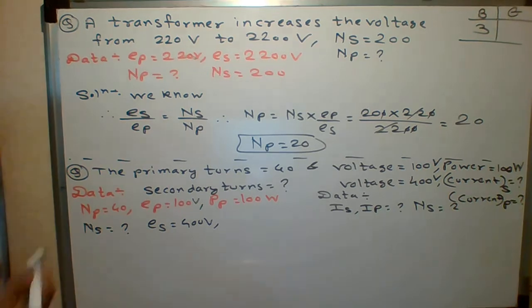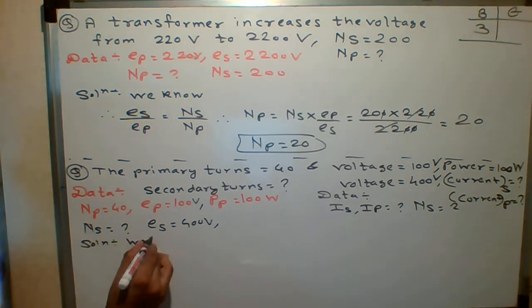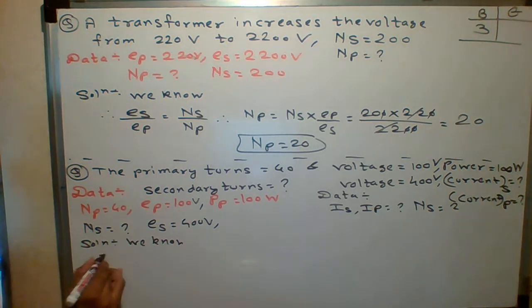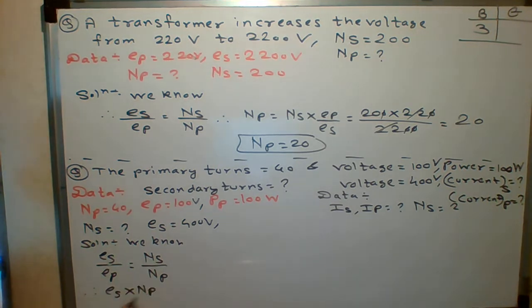Let us find out the answer. It is really easy question. Same as the same. What we have done in the last question. So students. We know. So students. What is EP upon ES. Or ES upon EP. Whatever you can write. ES upon EP is given by which formula. NS upon NP. Agreed. What I need. I need NS. So what is NS equals to. ES multiplied by NP upon EP. That is what NS.